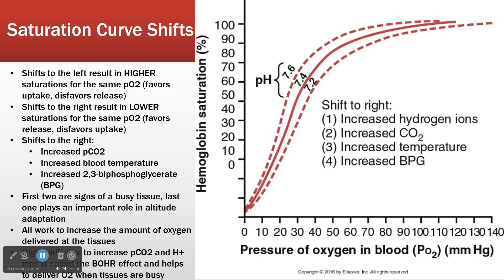We're not going to talk a lot about BPG. BPG is 2,3-biphosphoglycerate. It is an important way that we adapt to high altitude. When our BPG is higher, for the same PO2, we have a lower saturation. So when you're at altitude, there's less air and less oxygen in the air, and we need to dump the same amount of oxygen at a lower PO2 — that's what BPG does.